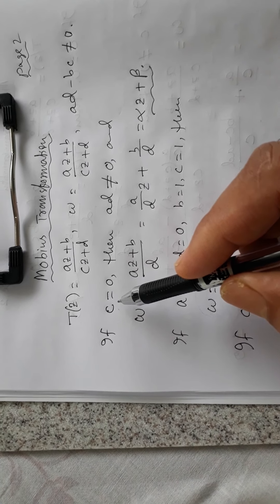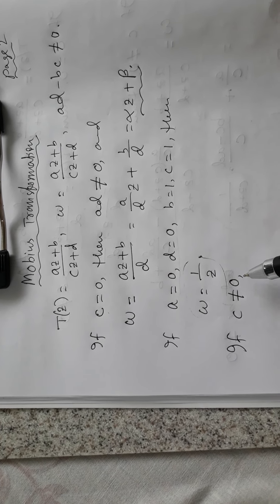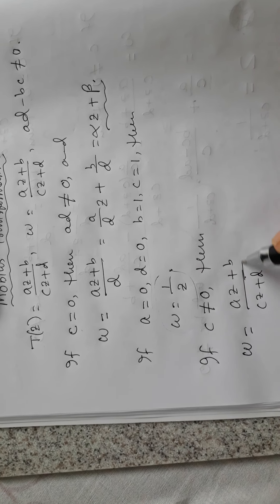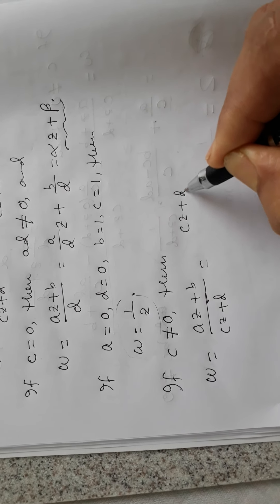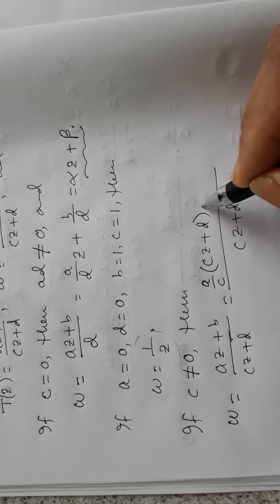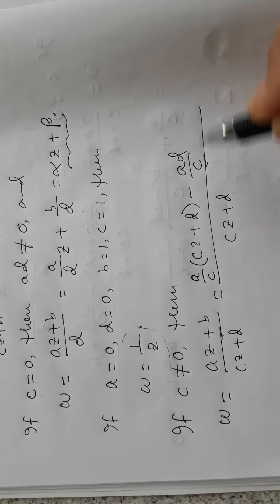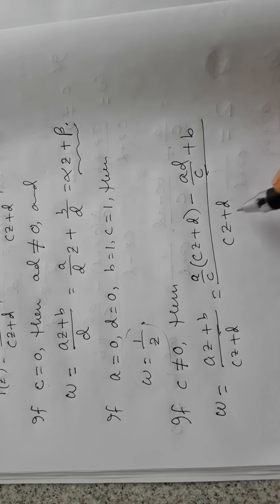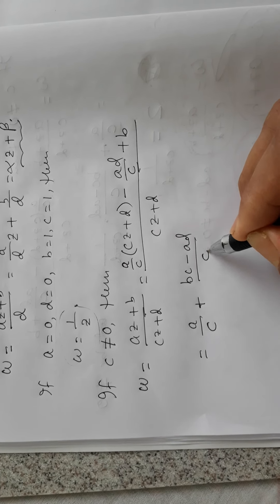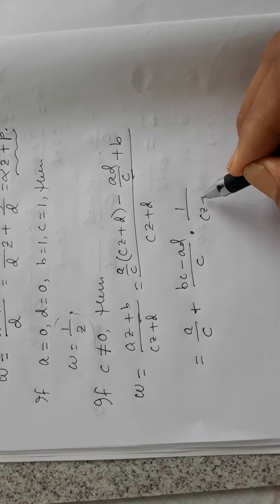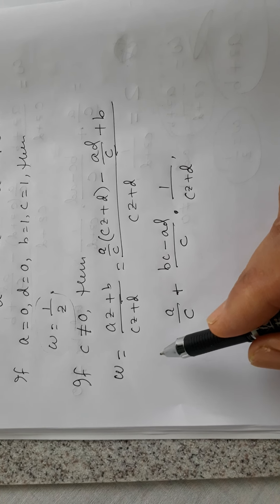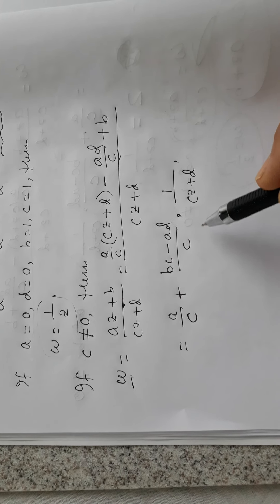If c is not equal to zero, we can write w = a/c + (bc - ad) / (c(cz + d)). Since ad minus bc is not zero, this is not a constant transformation. Here c is not zero, so this is well defined as a/c plus (bc - ad)/c times 1/(cz + d).